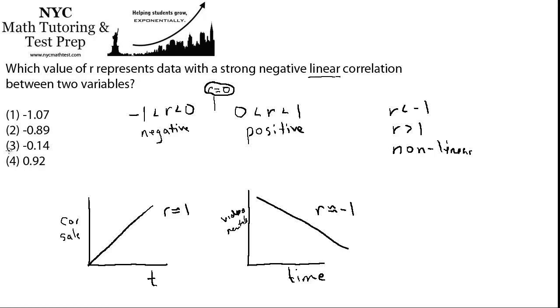Because we have a strong negative linear correlation, it doesn't mean that it's close to zero. And it's a negative correlation, so it's going to be a negative number because that corresponds to the slope. So we can eliminate four because it's a positive number. And now we have to choose between one and two.